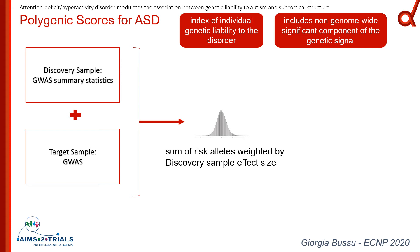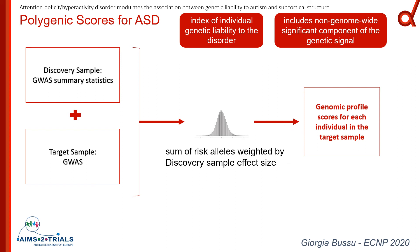You then perform a regression analysis to see whether these profile scores significantly predict the phenotype. You compare the variance explained by the full model to the reduced model — the one with only covariates — and choose the optimized threshold that gives the model explaining most of the variance. Once you've selected the optimal model, you compute the final genomic profile scores for your target sample, giving each individual a score representing the weighted sum of SNPs weighted by significance in the independent GWAS.